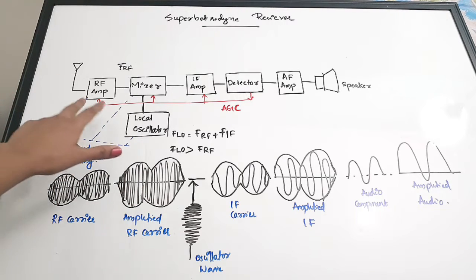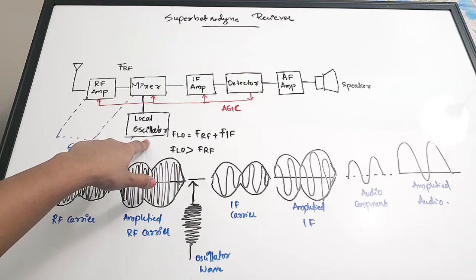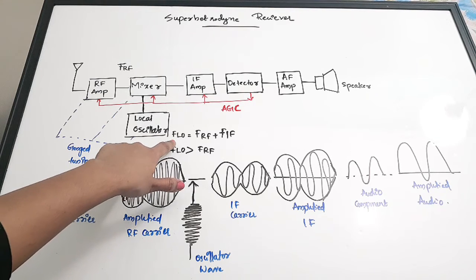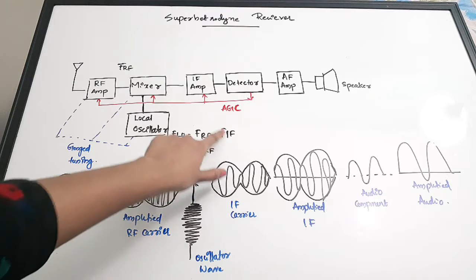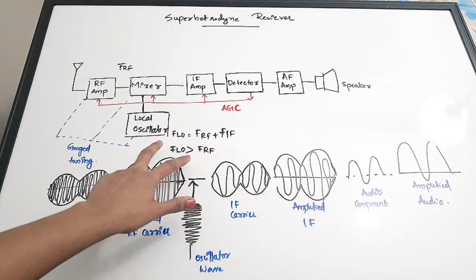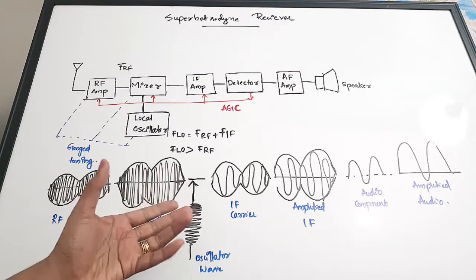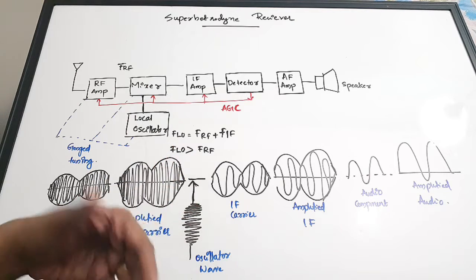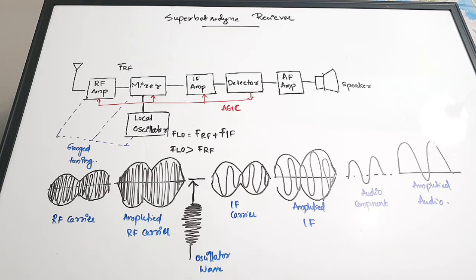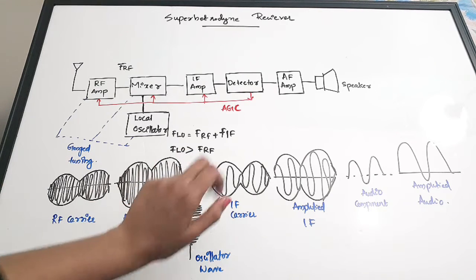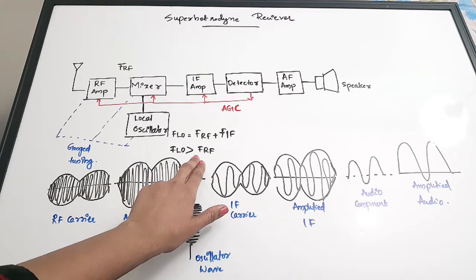The amplified RF carrier is given to the mixer, along with a waveform from the local oscillator. The frequency of this local oscillator waveform is taken as FLO, which equals FRF plus FIF. It is clear that the local oscillator frequency is always greater than the incoming RF wave frequency — that is the criteria for designing the local oscillator.